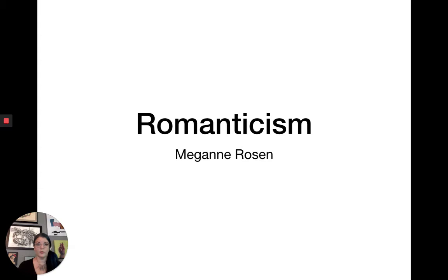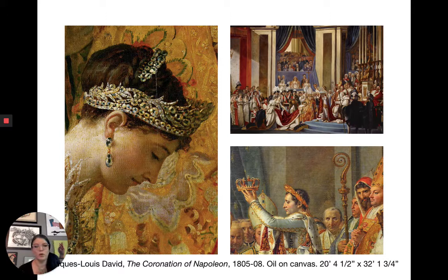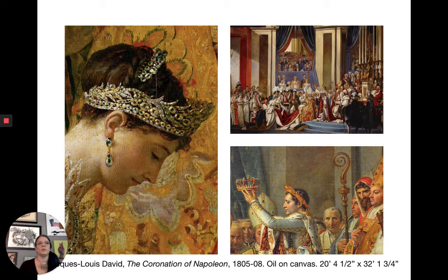Today we're going to talk about Romanticism. One of you wrote about David's painting of Napoleon for our discussion, and that's a good kind of bridge painting between Neoclassicism and Romanticism, because Napoleon is kind of the result of a lot of the things that happen while we're looking at Neoclassicism.